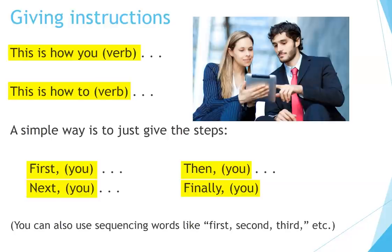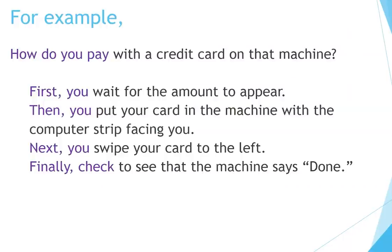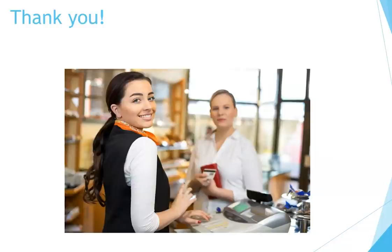You can also use sequencing words like first, second, third, etc. For example: 'How do you pay with a credit card on that machine?' First, you wait for the amount to appear. Then you put your card in the machine with the chip strip facing you. Next, you swipe your card to the left. Finally, check to see that the machine says 'Done. Thank you.'